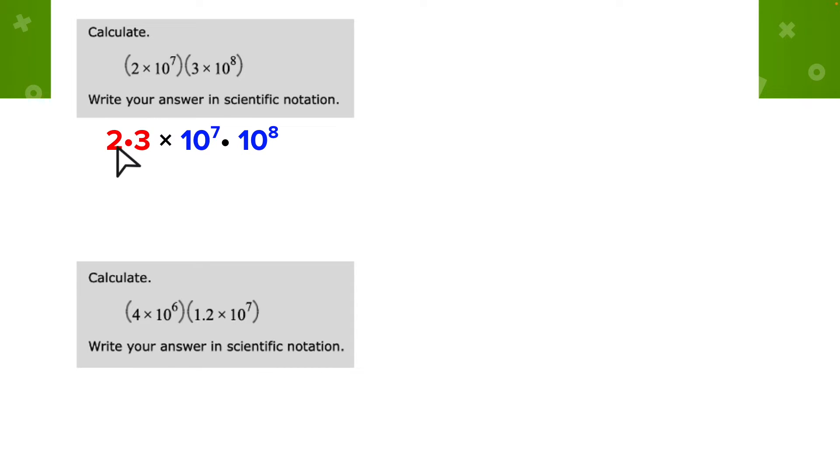So 2 times 3, we get 6. And then remember the power rules, I have the base of 10, I can go 7 plus 8, and I just have to combine those. So it's going to be 6 times 10 to the 15th power.